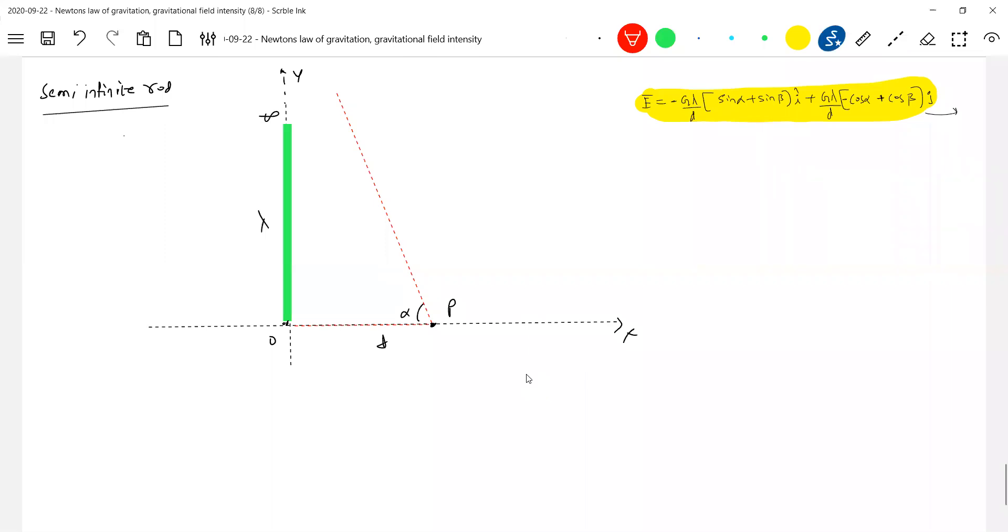Beta will be zero, so in the problem alpha will be 90 degrees, beta will be zero degrees. Let me substitute that particular formula: E equals minus g lambda d...